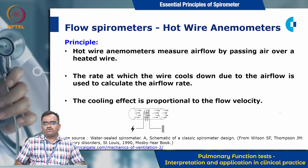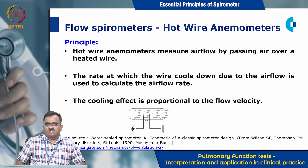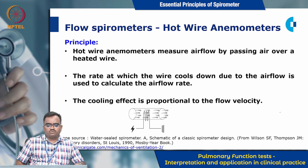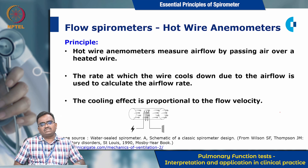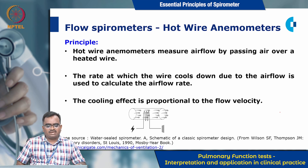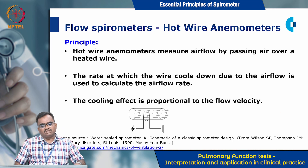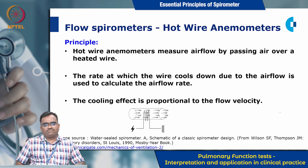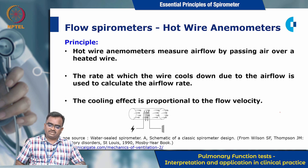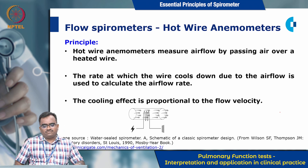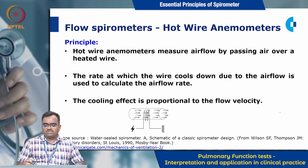The next type of flow spirometer is the hot wire anemometer. Here, the hot wire anemometer measures airflow by passing air over a heated wire. The rate at which the wire cools down due to airflow is used to calculate the airflow rate. The cooling effect is proportional to the flow velocity.